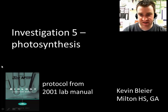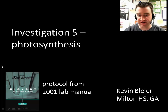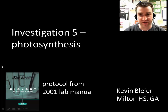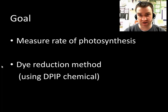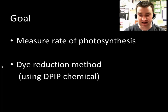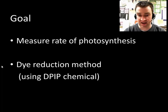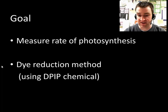We're talking about how Investigation 5 will work briefly today — how we're going to measure the rate of photosynthesis. That's our goal: measuring the rate of photosynthesis in any kind of cell that can do photosynthesis. In this case, we're going to see that we're working with spinach leaves and the chloroplasts within them.